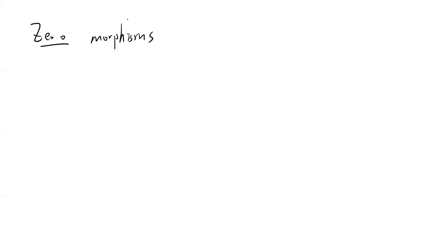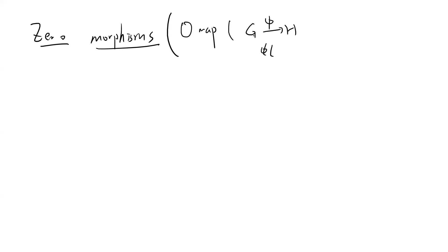Before the definition, you should intuitively think of zero morphisms as the kernel — the zero map. The ideal example is in groups: if you have two groups G and H and you map all of G to the identity of H, that should be viewed as a zero morphism. That's the prototype.